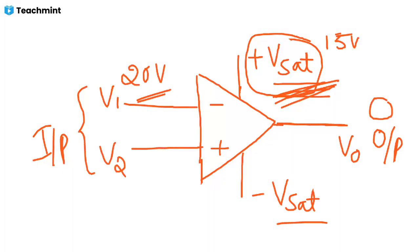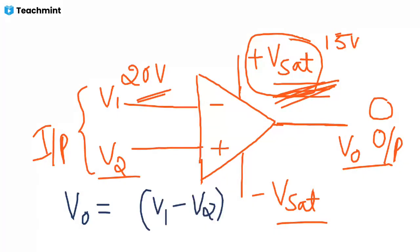Comparing the output voltage to the gain: the output is given by V0 equals A times the difference of V1 minus V2, where A is the open-loop gain and V1, V2 are the input voltages. This is the basic formula for the operational amplifier.